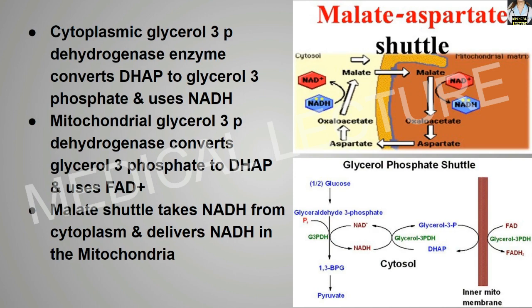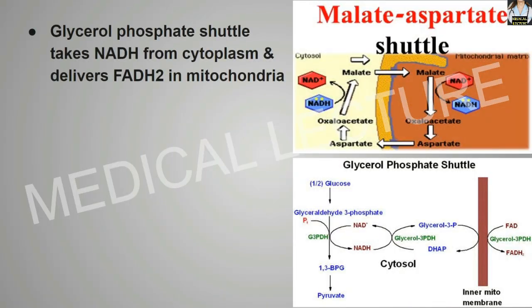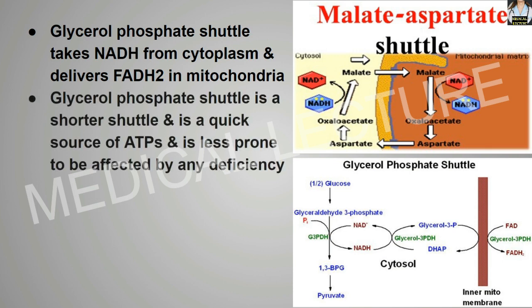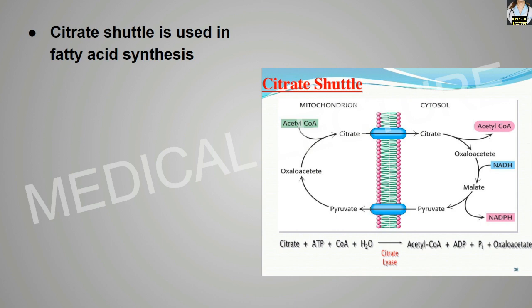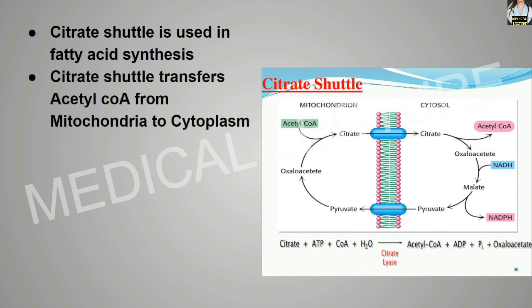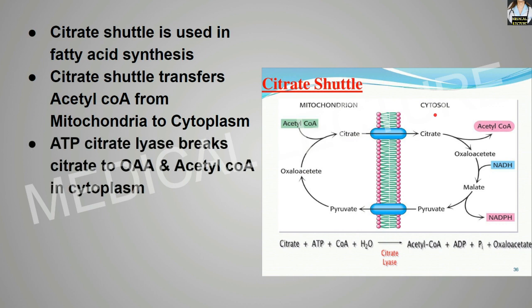The malate shuttle takes NADH from the cytoplasm and delivers NADH in the mitochondria. The glycerol phosphate shuttle is a shorter shuttle, a quick source of ATPs, and is less prone to be affected by any deficiency. It is used in fatty acid synthesis. The citrate shuttle transfers acetyl-CoA from the mitochondria into the cytoplasm. ATP citrate lyase breaks the citrate into oxaloacetic acid and acetyl-CoA in the cytoplasm.